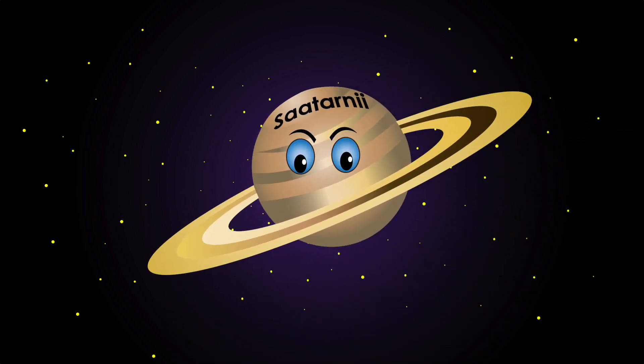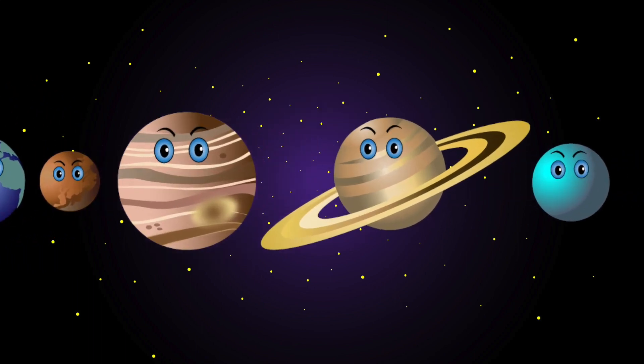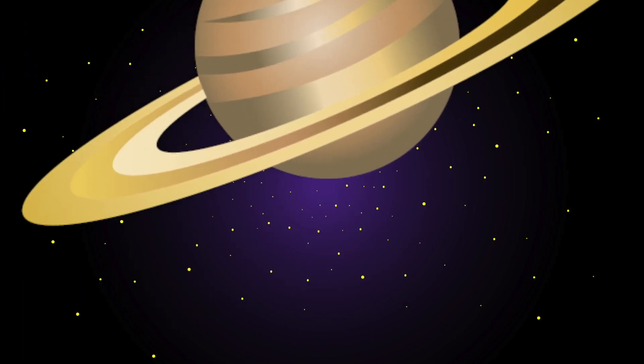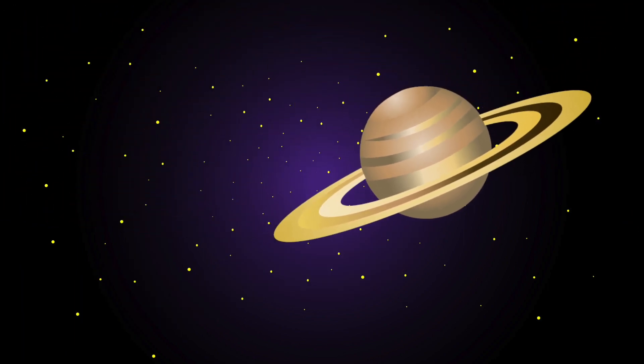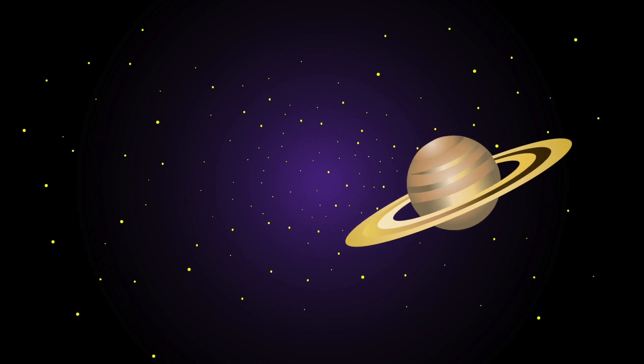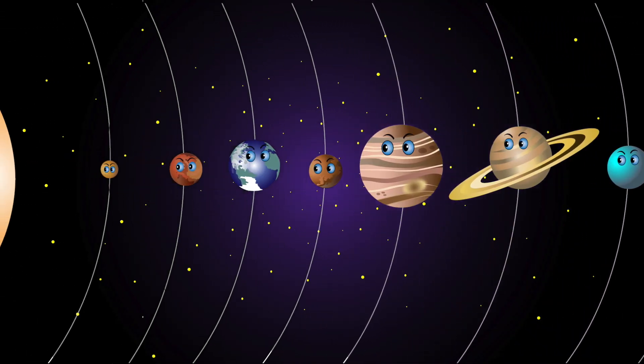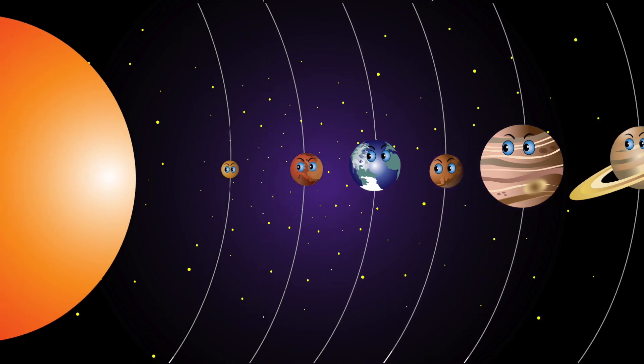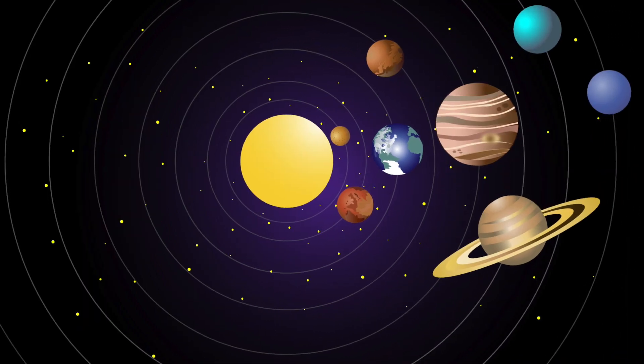My name is Saturn. I am brown in color. I'm the sixth planet from the sun. My outer rings are extremely thin. They're made of dust and icy chunks. There are eight planets in our solar system. We revolve around the sun.